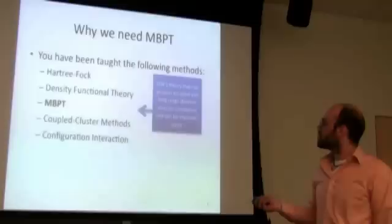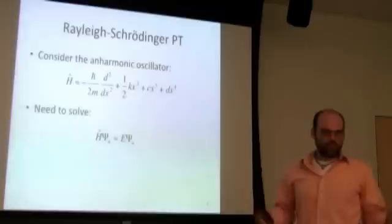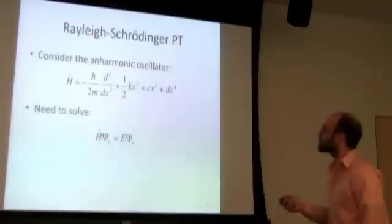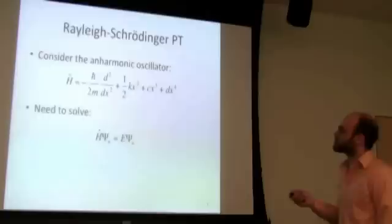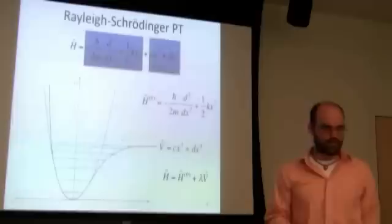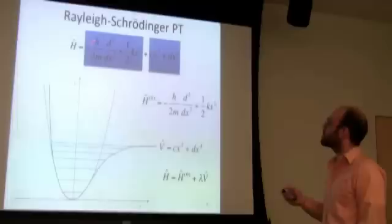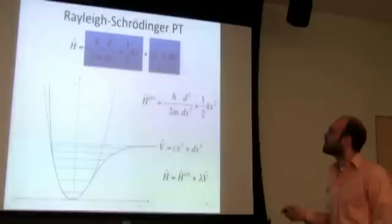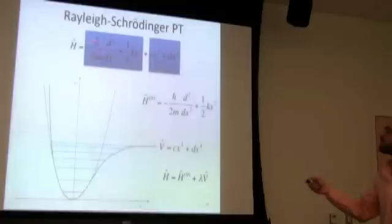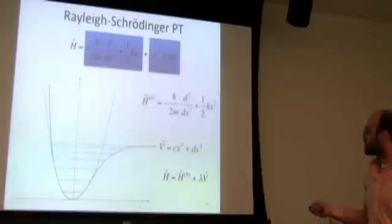This is the level of theory we're going to talk about today: many-body perturbation theory. We start with the generic version, Rayleigh-Schrödinger perturbation theory, introduced through an application to anharmonic oscillators. We have a Hamiltonian that looks rather complicated and we need to solve HΨ = EΨ. What we can do is break it into a part we know how to solve — the harmonic oscillator — plus another part we don't know how to deal with. We redefine our Hamiltonian as the unperturbed Hamiltonian H₀ plus some perturbation, and introduce a parameter lambda that transitions from unperturbed to fully perturbed.